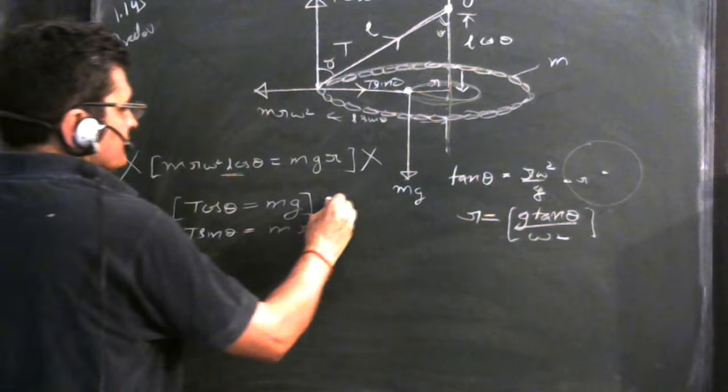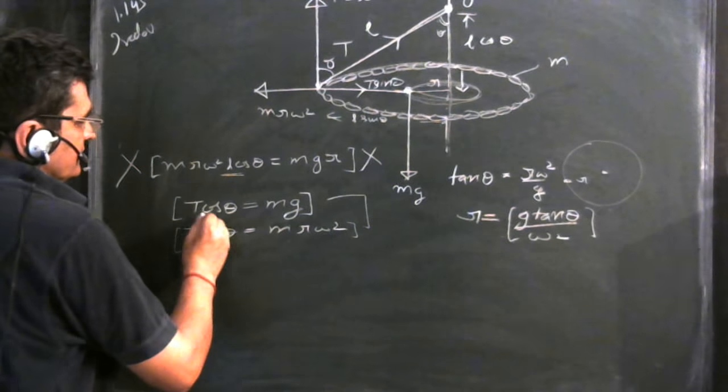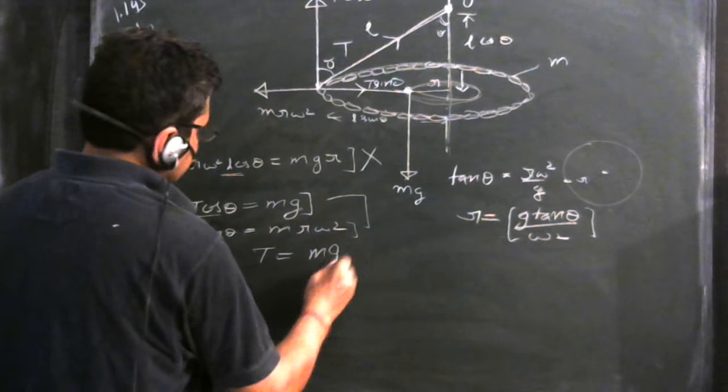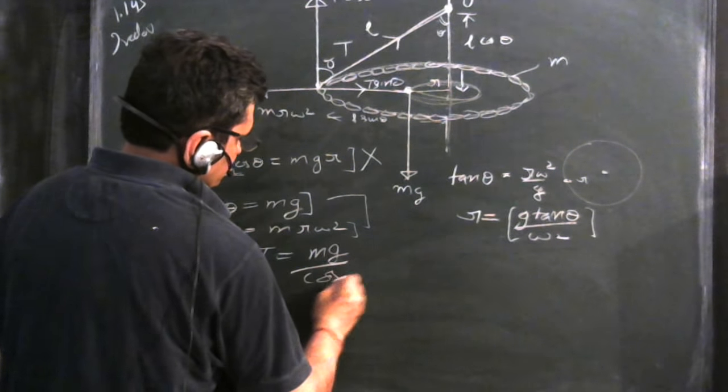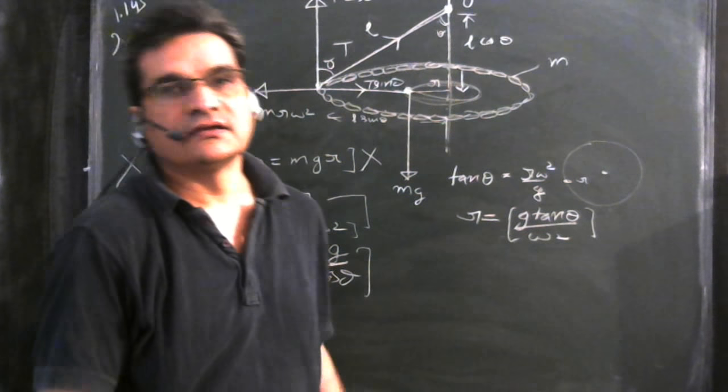We are using very simple equations, that is equating the forces. Now, what is the value of tension? Tension will be Mg upon cos theta, which is the tension acting in the string.